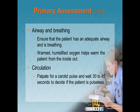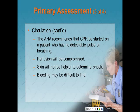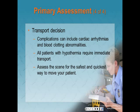Assess airway and breathing — ensure the patient has an adequate airway and is breathing. If the patient is breathing slowly or shallow, ventilation with a bag-mask device may be necessary. Warmed humidified oxygen helps warm the patient from the inside out. Check circulation by palpating a carotid pulse for at least 30 to 45 seconds to decide if your patient is pulseless. The American Heart Association recommends CPR be started on a patient who has no detectable pulse or breathing. Bleeding may be difficult to find because of slow moving circulation and thick clothing. All patients with hypothermia require immediate transport. Rough handling of a hypothermic patient may cause the heart to fibrillate.